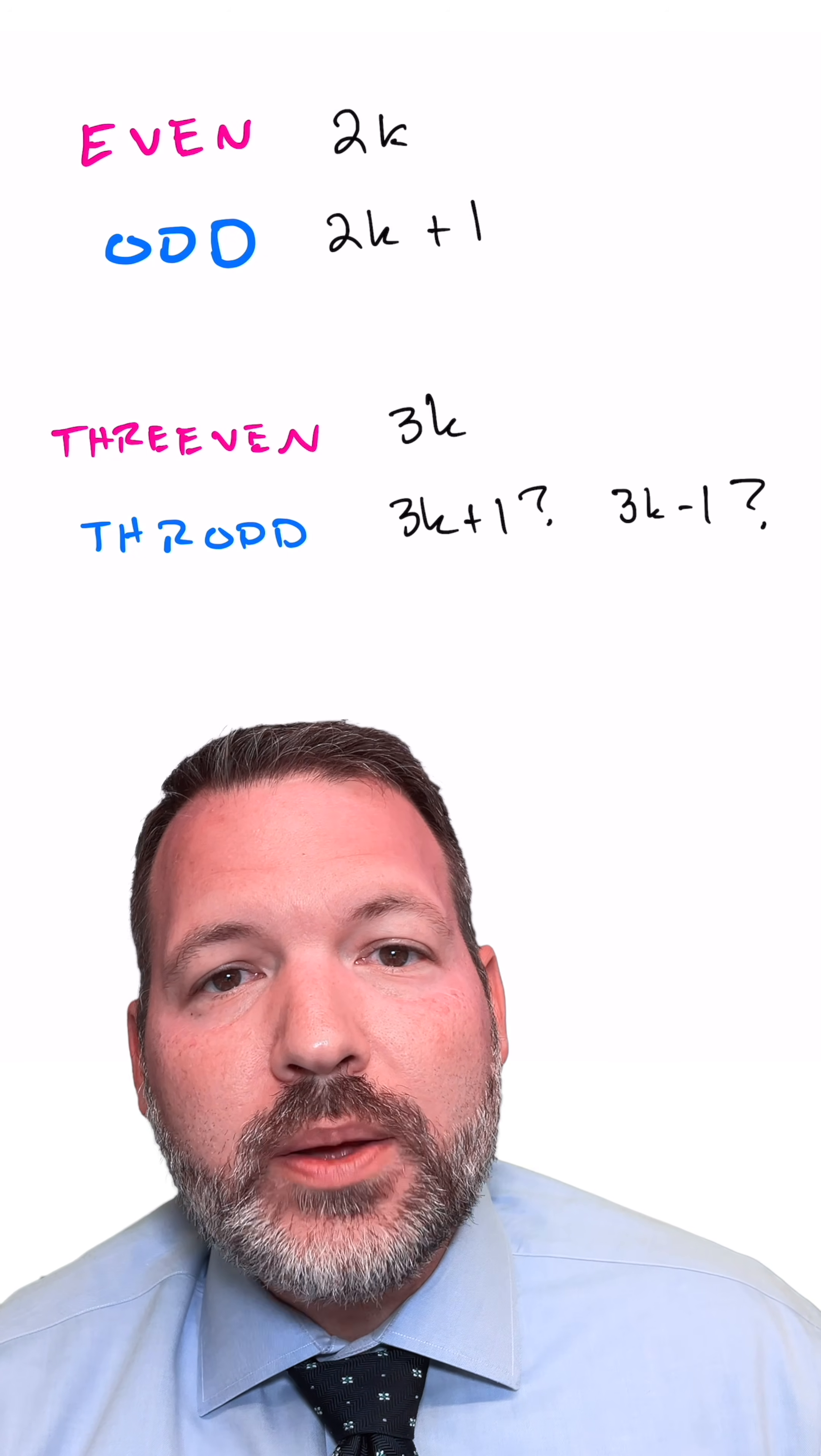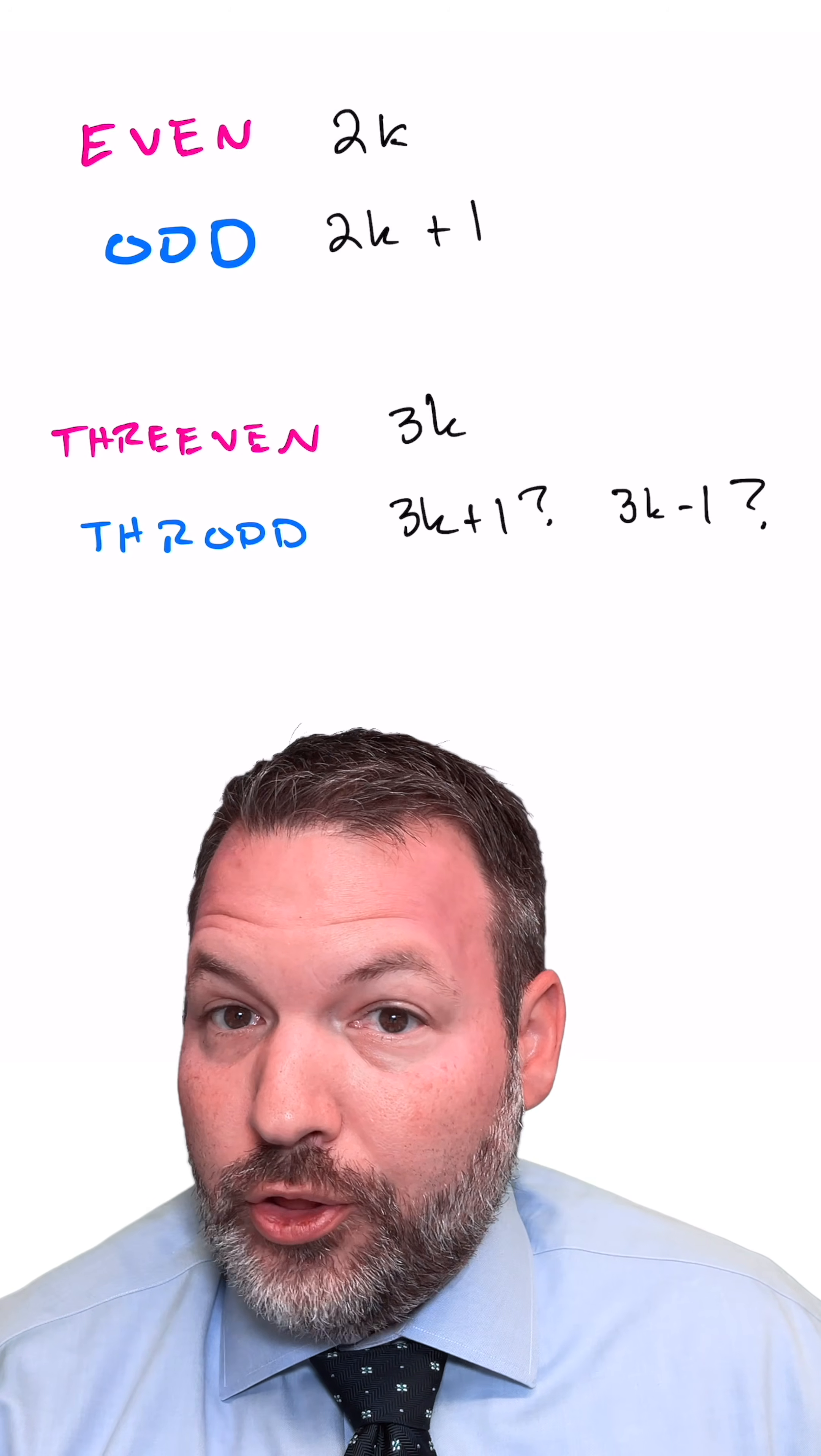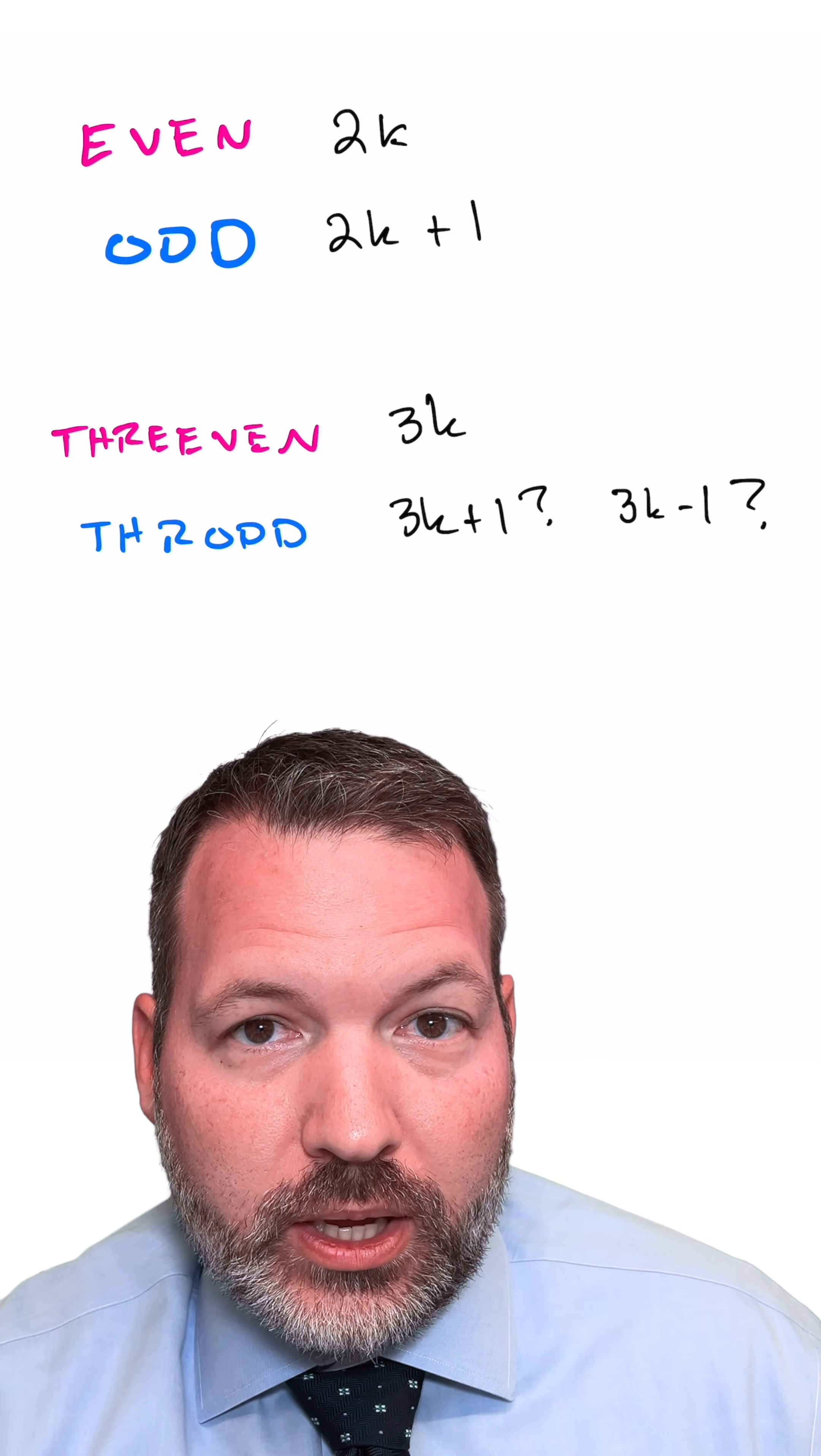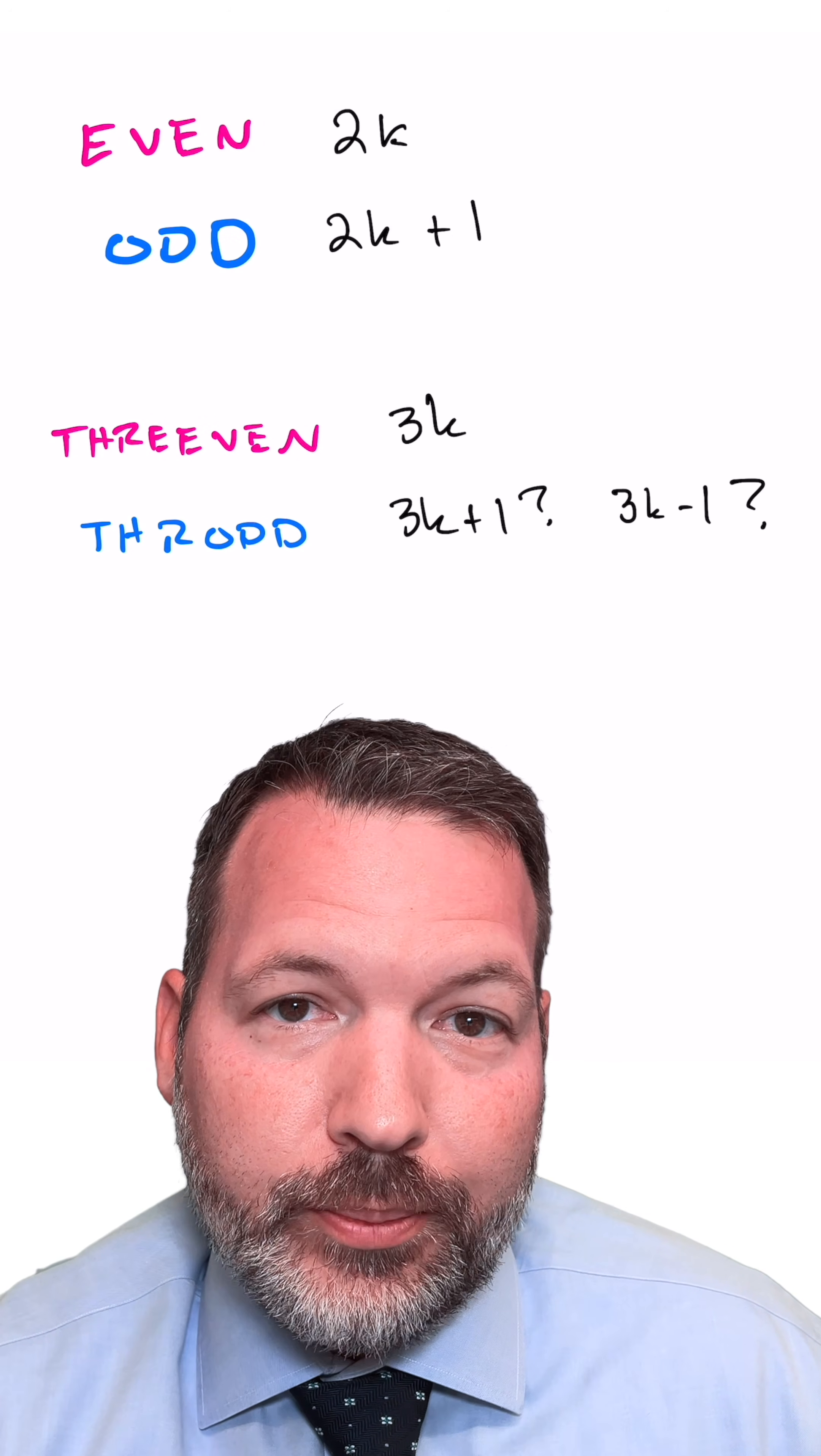Similarly, if you divide up all the numbers into three-ven, the numbers that are divisible by three, and throd numbers, the numbers that are not divisible by three, all of the prime numbers other than three itself live among the throd numbers.